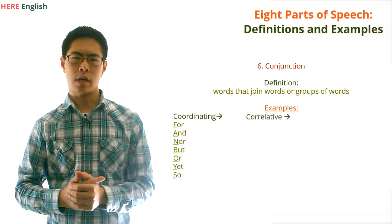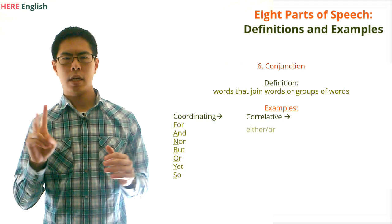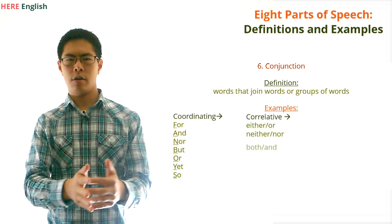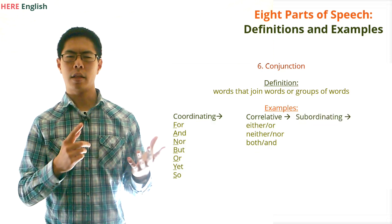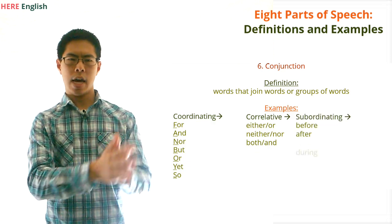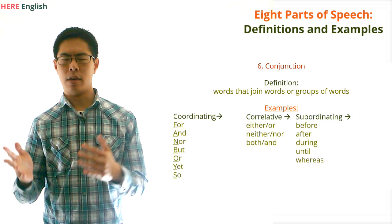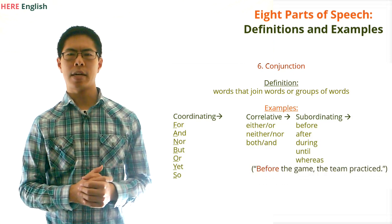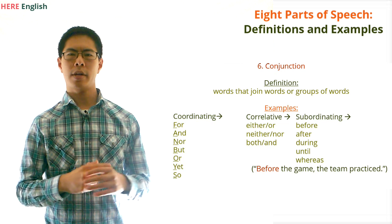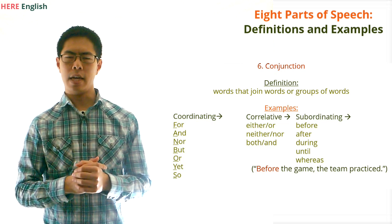Correlative conjunctions are conjunctions that have two parts, such as either or, neither nor, or both and. Subordinating conjunctions begin subordinate clauses and are words like before, after, during, until, and whereas. For example, in the sentence before the game, the team practiced, the word before is the subordinating conjunction that begins the subordinate clause before the game.